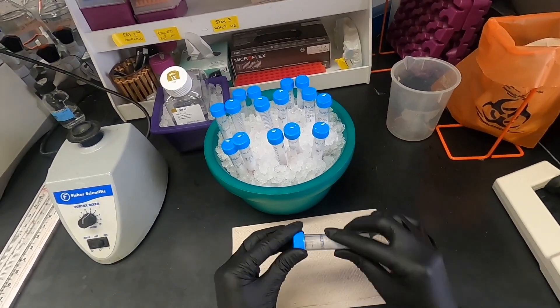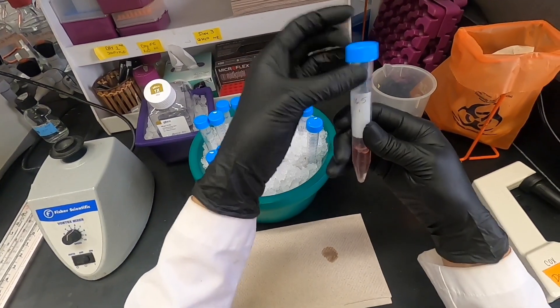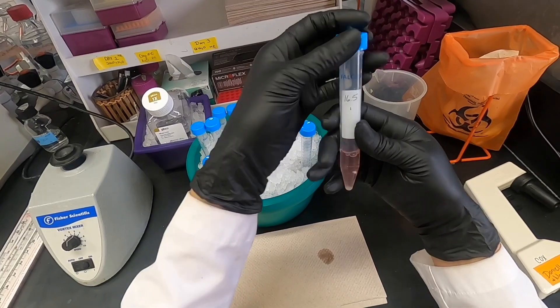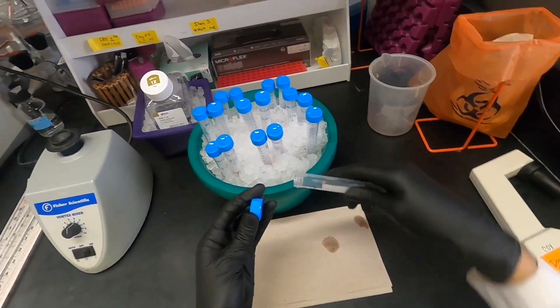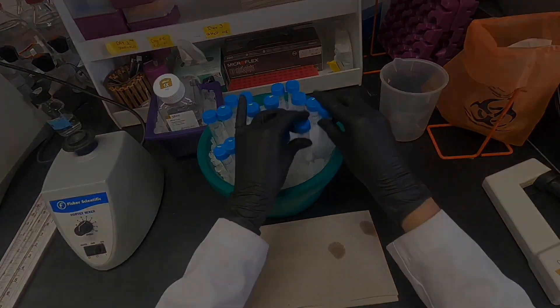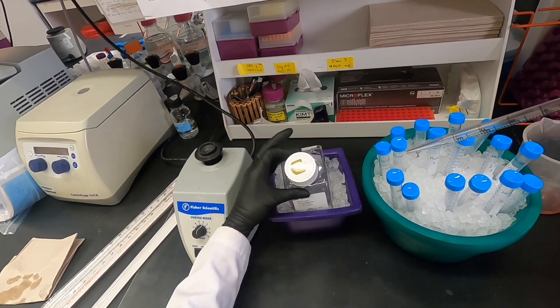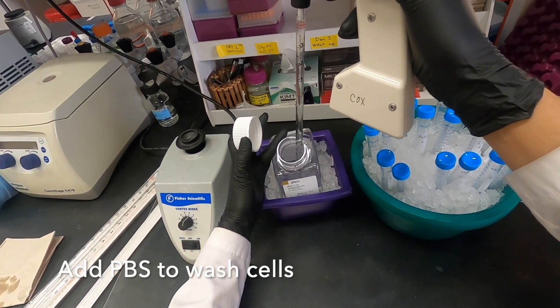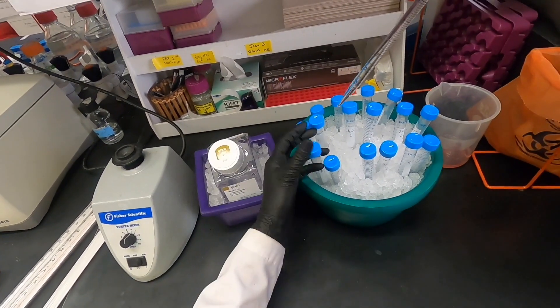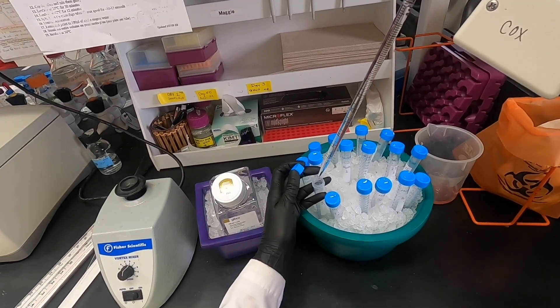This is easily done by inverting the tube over a waste container in order to decant the supernatant. The cell pellet will remain intact as long as the tube is handled with care. The cells will then be washed using cold PBS. The purpose of this is to remove the excess media and FBS.